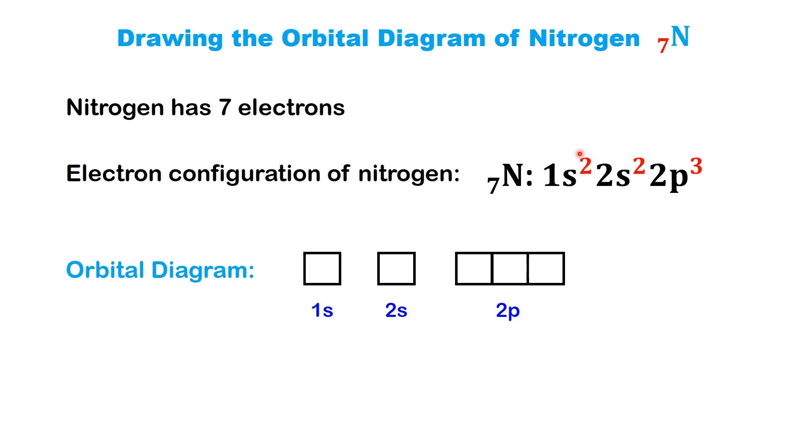Now, according to the electron configuration, the first two electrons go into the 1s orbital. We place two arrows in the 1s box, one pointing up and one pointing down. These arrows represent the two electrons in the 1s orbital, each with opposite spins. Next up is the 2s orbital, which holds two electrons, as shown by 2s2. We'll place one up arrow and one down arrow in the 2s box to fill it.